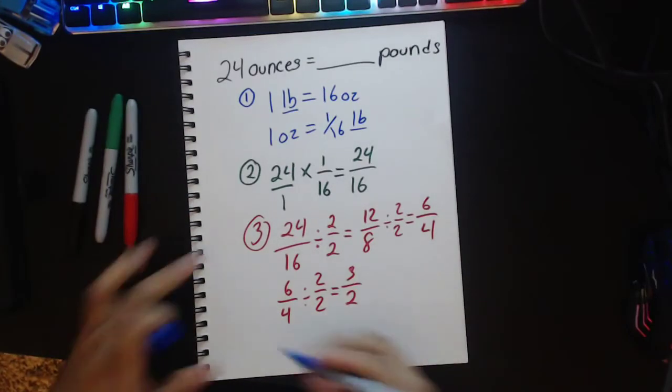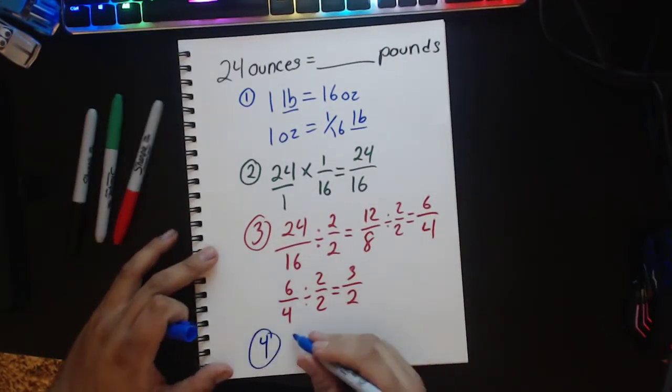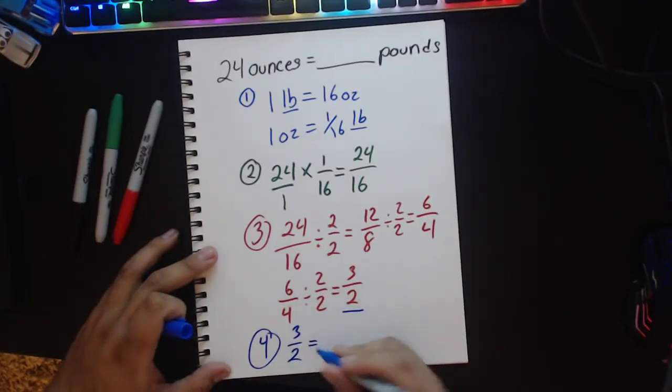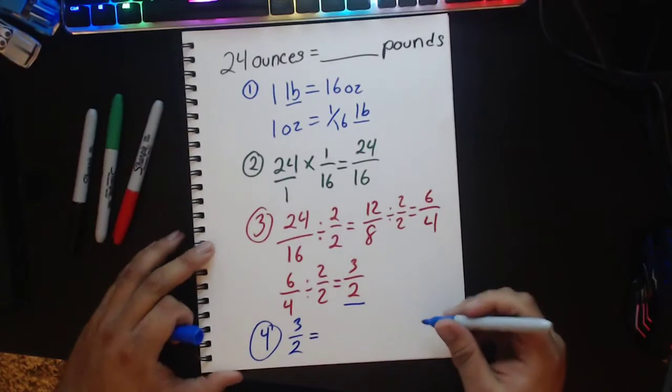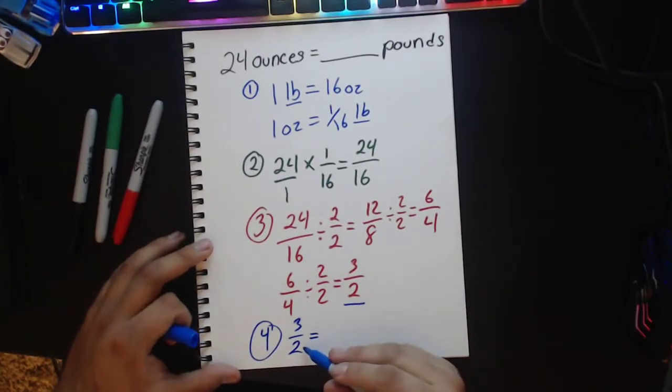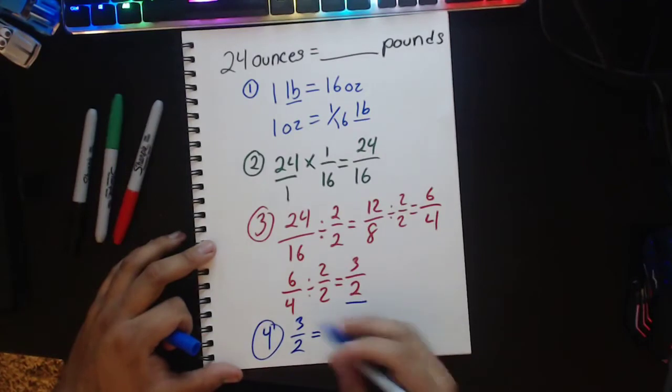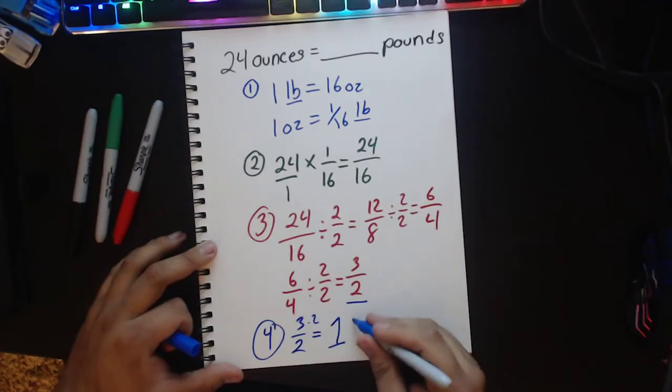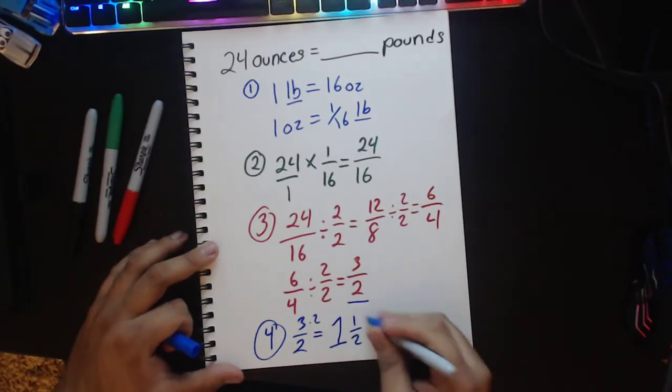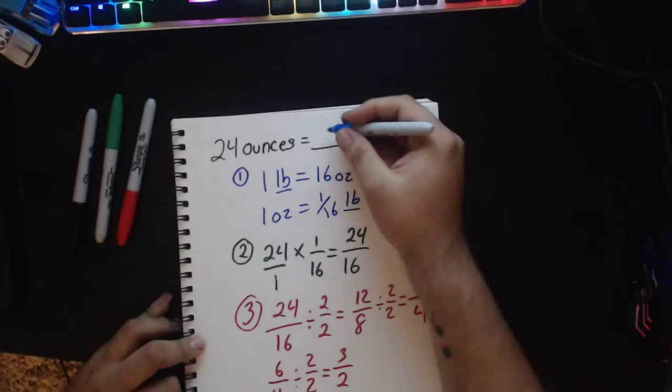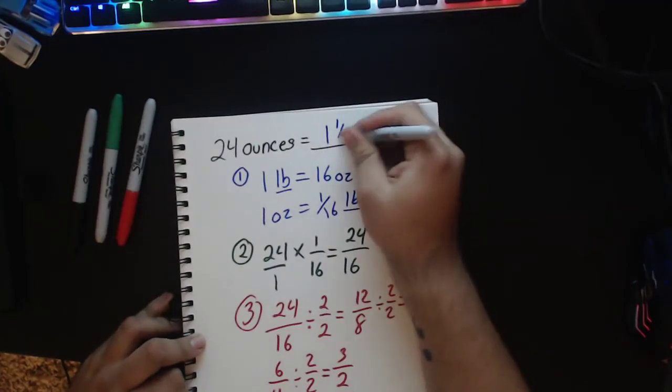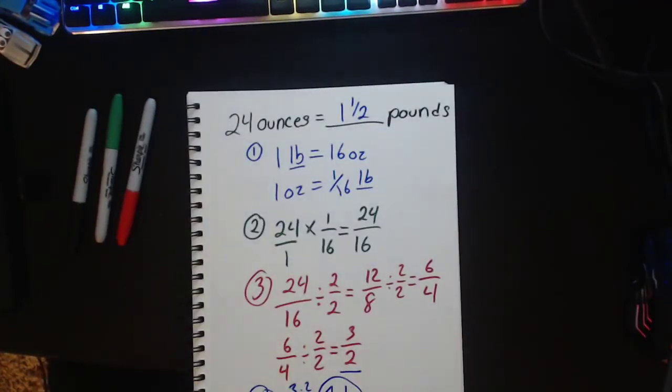So now I'm going to go back to my fourth step. I'm going to write down the last thing that I had which is 3 over 2 to create my improper fraction. Well I know that I need 2 parts to make a whole. Well I have 3 parts over 2. So I'm going to take away 2 away from the 3 to give me 1 whole which will leave me with a half left over. So I have 1 and a half as my answer. We have 1 and 1 half of a pound from 24 ounces.